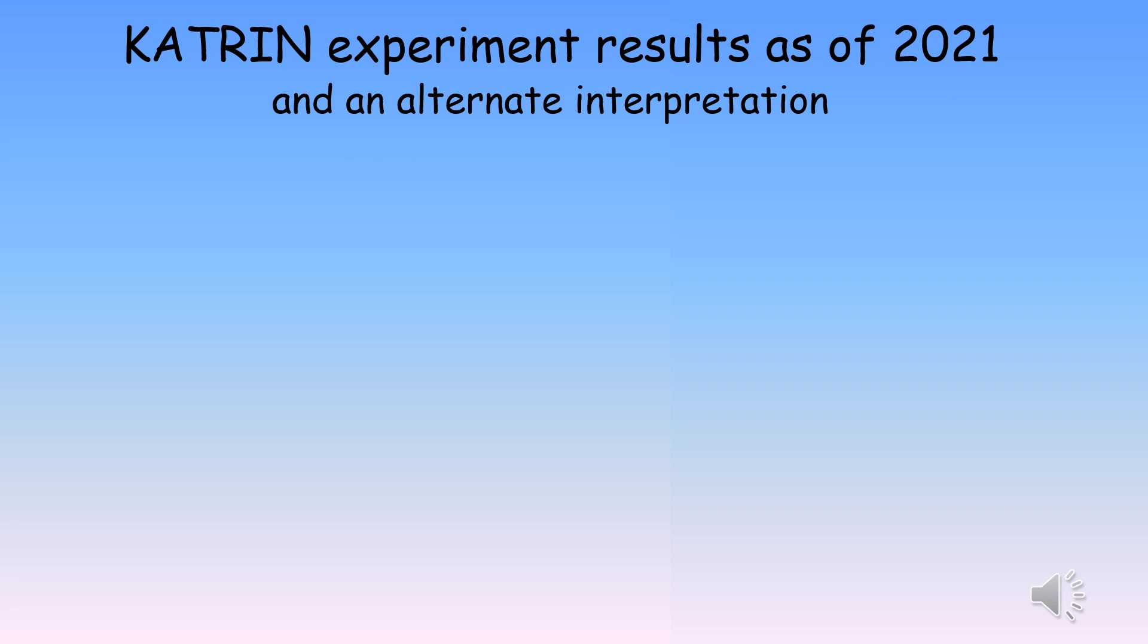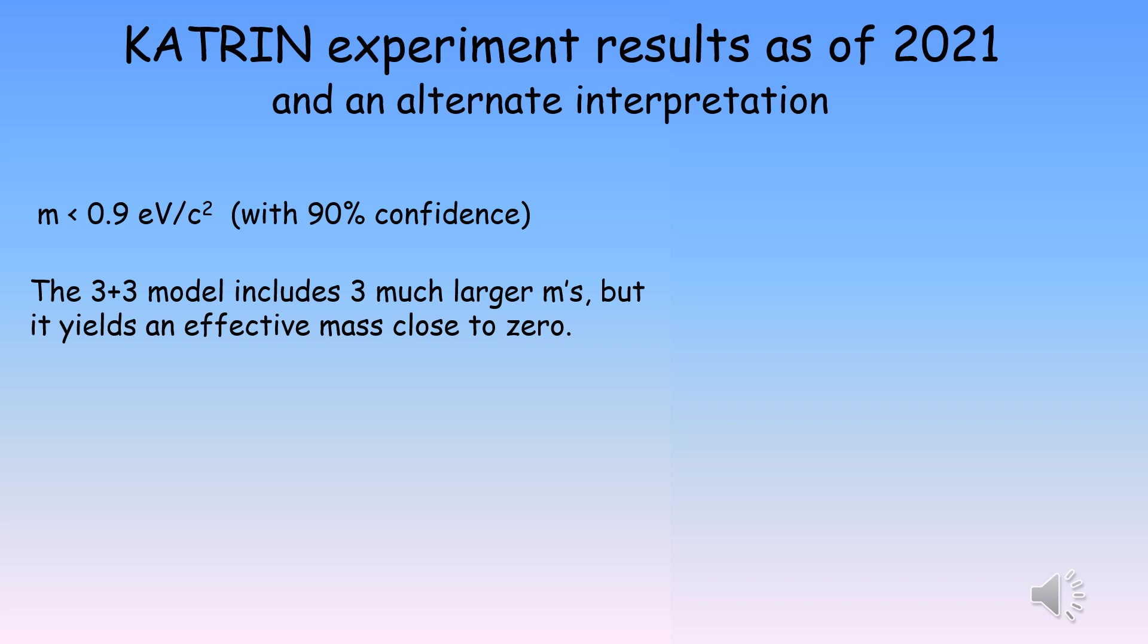KATRIN's results as of 2021 are that the neutrino mass is less than 0.9 eV over c squared. To put that value into perspective, an electron's mass is over half a million times greater. You might think that such a small upper limit on the mass would rule out the 3 plus 3 model with its 3 much larger masses. But because of the negative m squared tachyonic neutrino in the model, the net effective mass of the 3 can be very close to zero. It's similar to the way that three weights on one side of a seesaw can give an effective weight equal to zero and balance with nothing on the other side, provided that one of the three weights is negative in the form of a helium balloon.